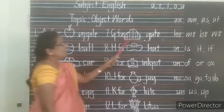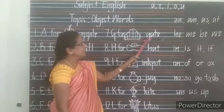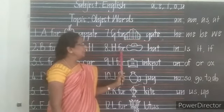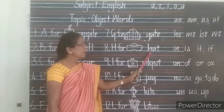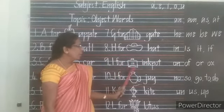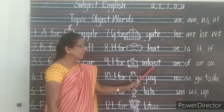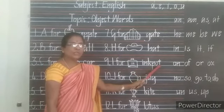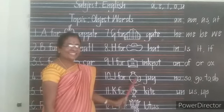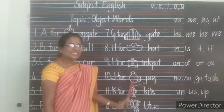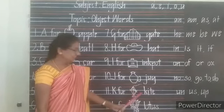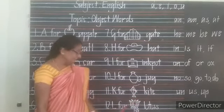G — Gate. G-A-T-E, Gate. H — Hat. H-A-T, Hat. I — Ink Pot. I-N-K P-O-T, Ink Pot. J — Jug. J-U-G, Jug. K — Kite. K-I-T-E, Kite.